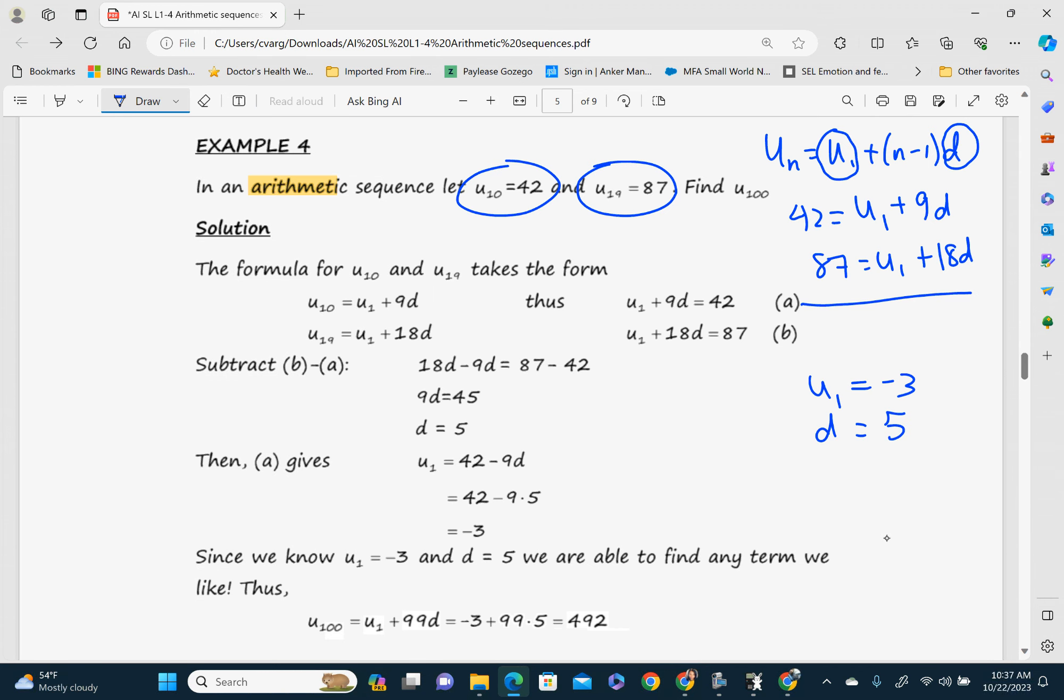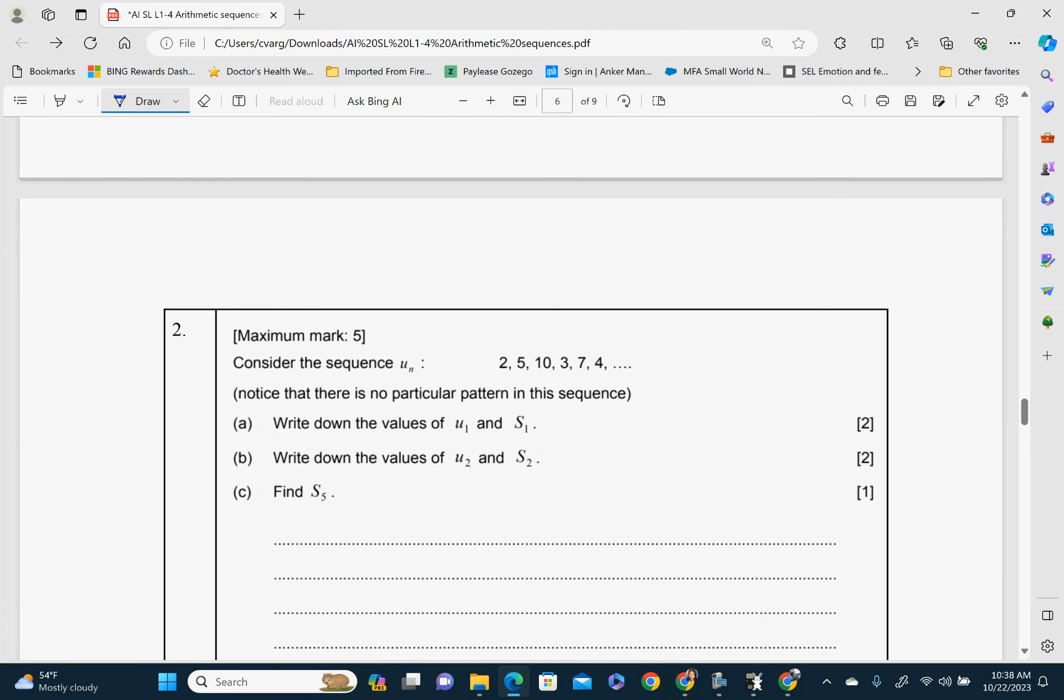So now what we have to do is take those two numbers that we got and plug it back in because now we're asked to find the 100th term. So for U100, U1 is negative 3. We're plugging it back into this formula. So U1 is negative 3 plus parentheses N is 100, so 100 minus 1, and our D now is 5. So plug this into the calculator. Hit enter. And you're going to get 492. That's where this number is coming from. So that's our answer. So go ahead and try these problems. Check your answers at the end. Good job.